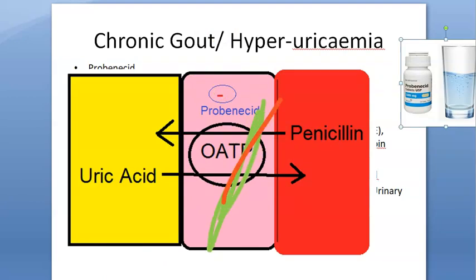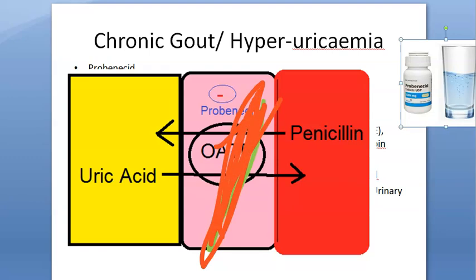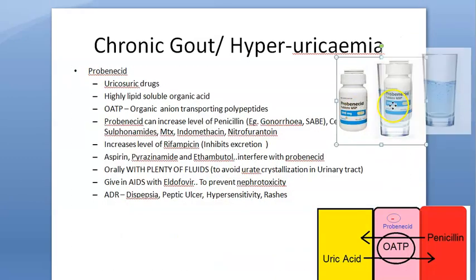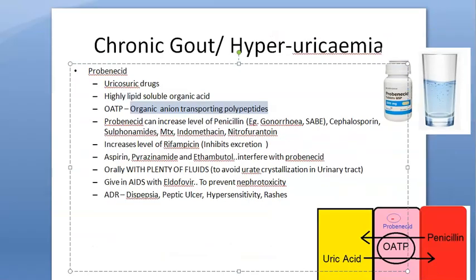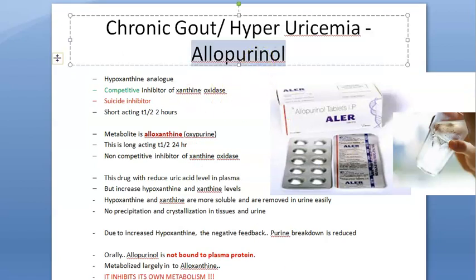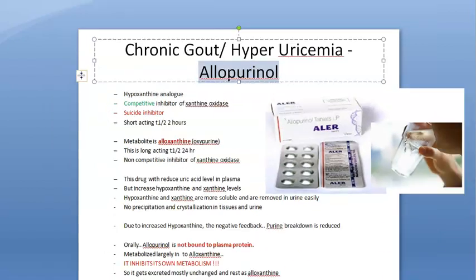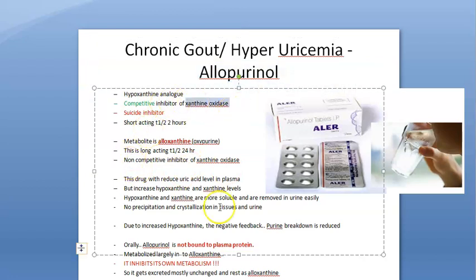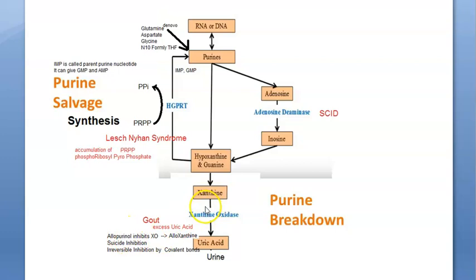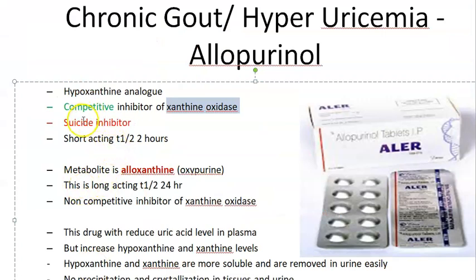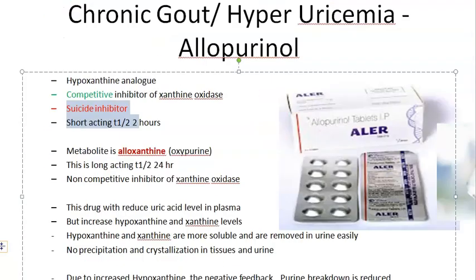Probenecid works by stopping OATP — organic anion transporting polypeptide — blocking reabsorption of uric acid from urine, so uric acid is excreted out of the body. Then allopurinol inhibits xanthine oxidase, so xanthine is not converted into uric acid, giving you less uric acid. Allopurinol has a unique mechanism — it is a suicide inhibitor; it inhibits its own metabolism.